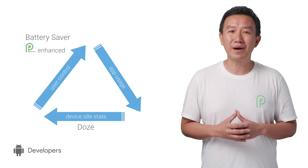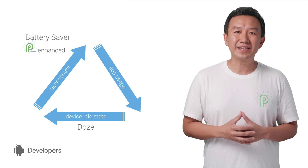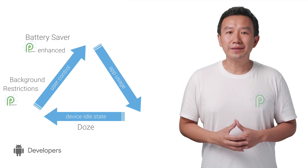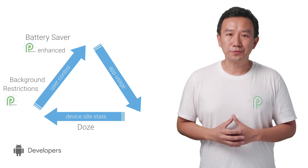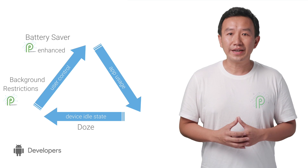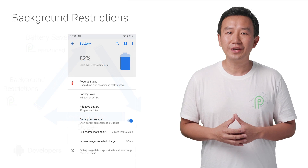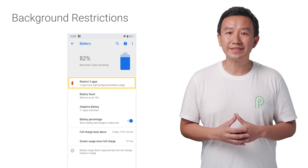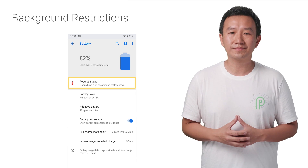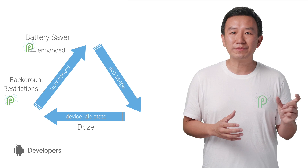There are times when apps might be too aggressive in acquiring wake locks, or in general doing things that are considered bad for battery drain. New in P, there's the background restrictions feature. Based on Android Vitals, the device monitors and detects apps that demonstrate known bad behaviors and flags them to users, who can then choose to restrict these apps from running jobs, alarms, background services, and so on.